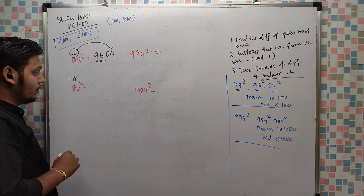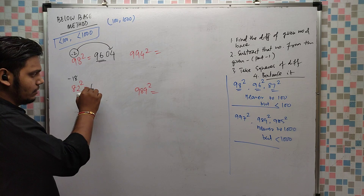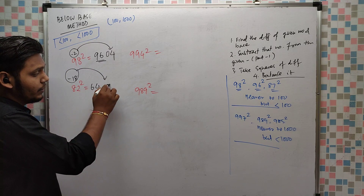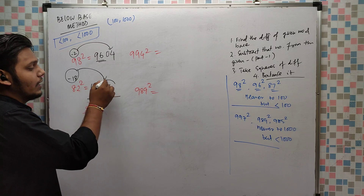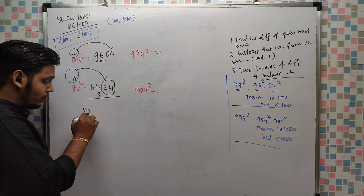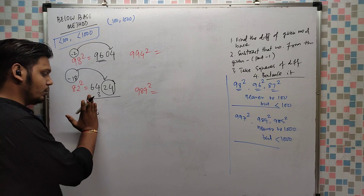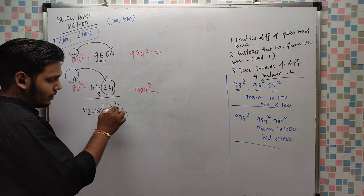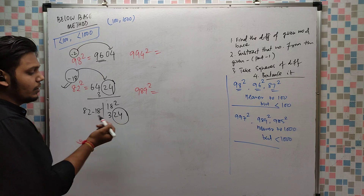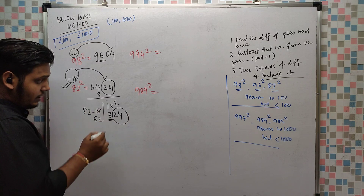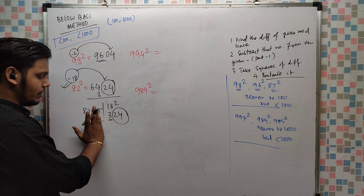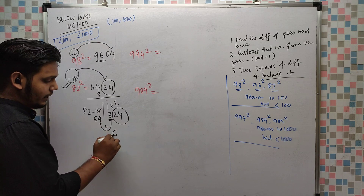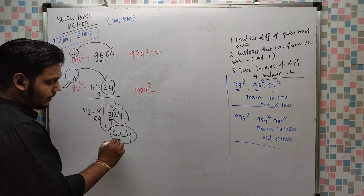For 82²: 82 is 18 less than 100. So 82 minus 18 is 64, and 18² is 324. Base is 100 so we keep only 2 digits in part 2 — that's 24 — and the remaining 3 is added to the previous part: 64 plus 3 is 67. The answer is 6724.